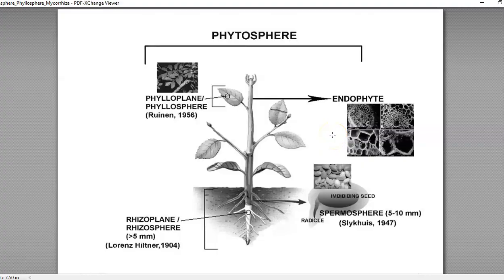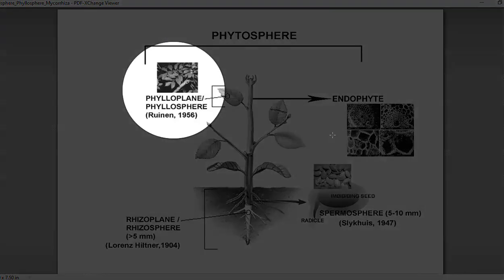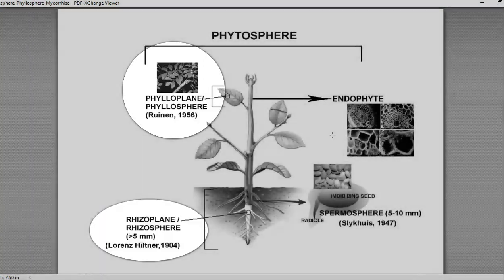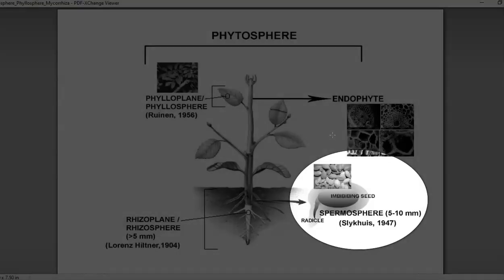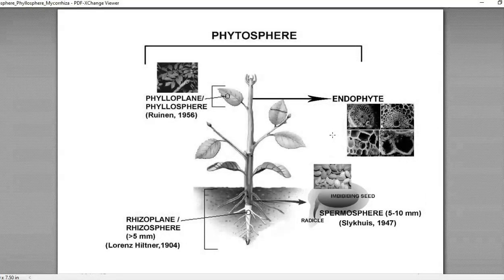Look at the image of the phytosphere. The phytosphere is made up of the following components: phyllosphere, rhizosphere, and spermosphere. These three important spheres together are referred to as a phytosphere. We will also be studying something related to endophytes.